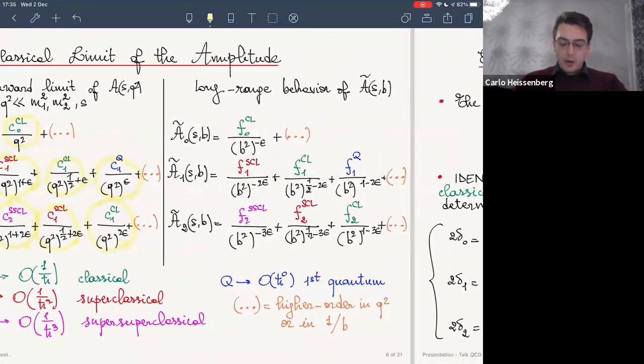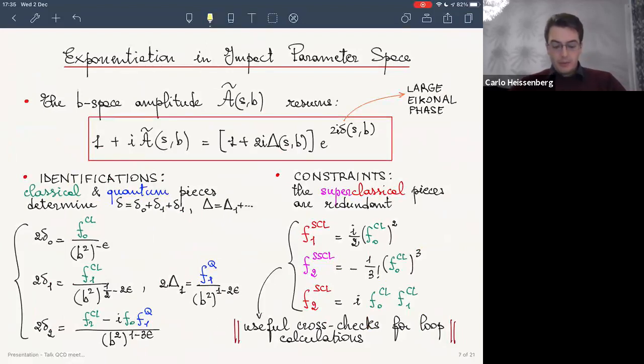But at this point, the Eikonal comes to the rescue. In fact, the amplitude in this classical limit resums if written in impact parameter space. This means that the plethora of singular terms we were dealing with in the previous slide was just due to the fact that this exponential here had been written poorly. More precisely, this means that this exponential delta is an Eikonal phase. Small delta is, in fact, a large quantity in the classical limit and should be more properly regarded as a rapidly oscillating phase and not sum of large contributions. At the practical level, this entails a number of identifications that allow us to retrieve this Eikonal phase big delta and this Eikonal remainder from quantum and classical pieces of the amplitude, plus some constraints. Namely, all these super classical terms that we were dealing with are just redundancies that appear as higher orders in the expansion of the exponential.